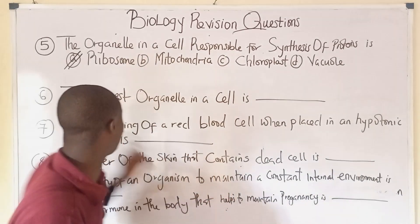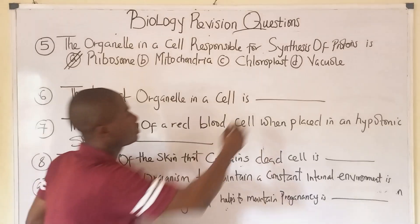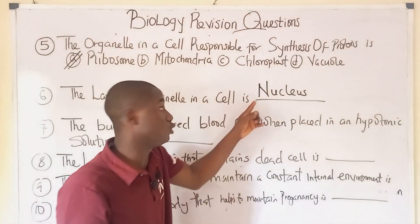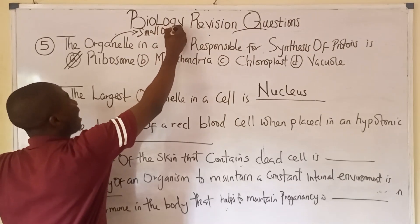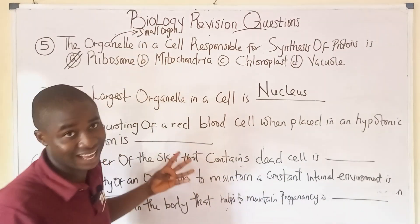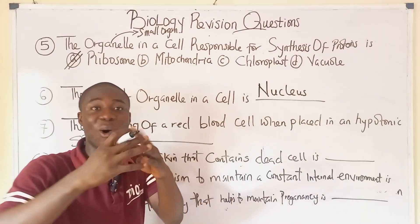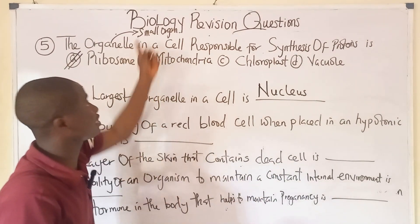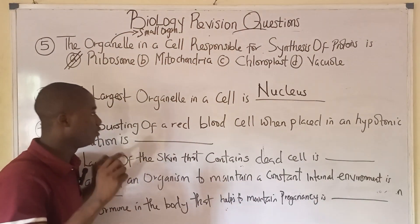Question six: the largest organelle in a cell is the nucleus. Out of all organelles, the nucleus is the largest. Organelles can be regarded as small organs — they are not like the organs of the human body such as the liver or kidney, which are large. Organelles are found in a cell and they are small — that is what the word means.